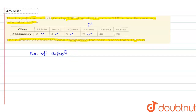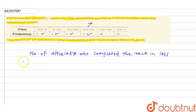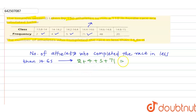The number of athletes who completed the race in less than 14.6 seconds is 2 plus 4 plus 5 plus 71, which gives us 9, then 11 — so this is equal to 11 plus 77, giving us 88. Therefore, 88 athletes completed the race in less than 14.6 seconds.